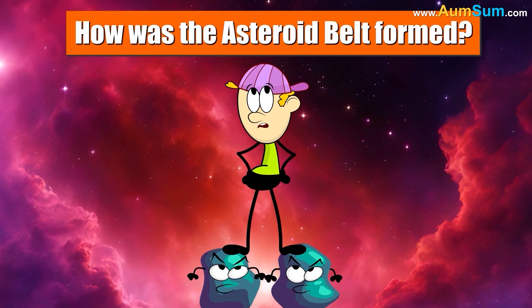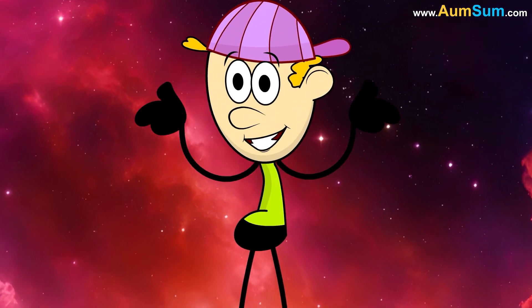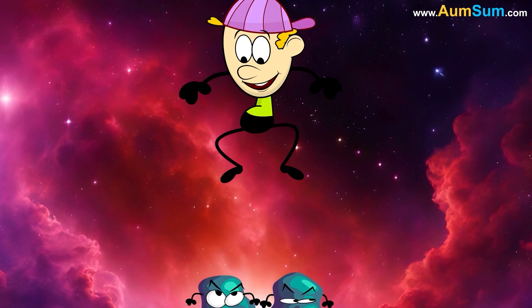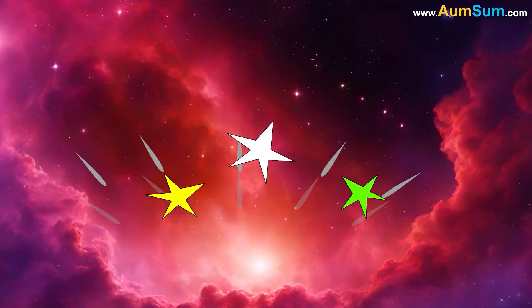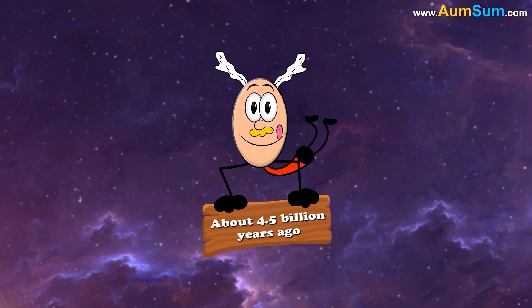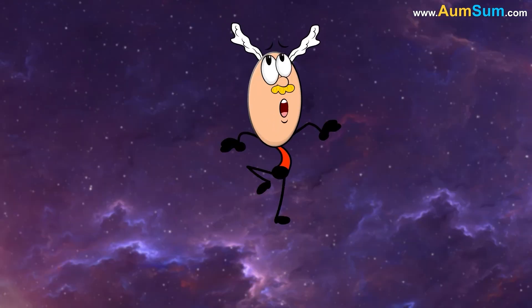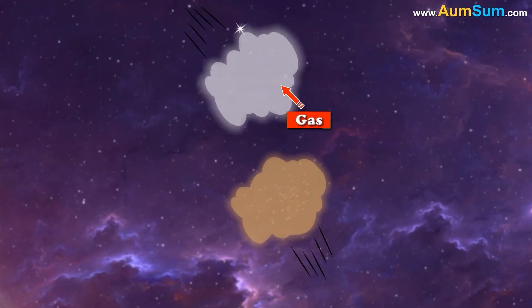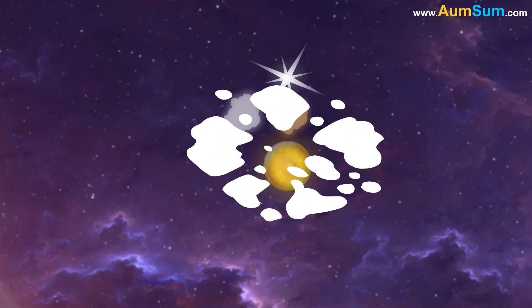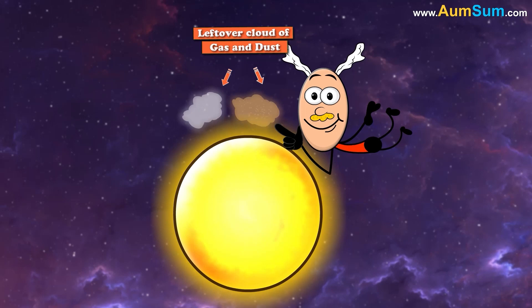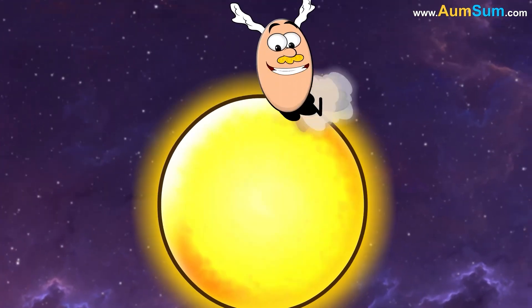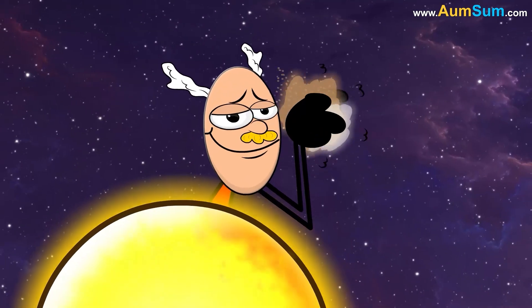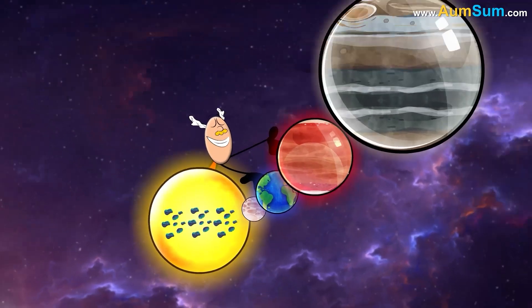How was the asteroid belt formed? About 4.5 billion years ago, our sun was formed from a huge cloud of gas and dust. Leftover cloud of gas and dust started spinning around the sun. These bits began to collide and stick together and slowly converted into planets. But still small bits of rocks were left over. These are called asteroids.